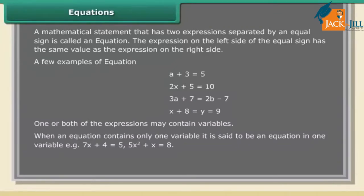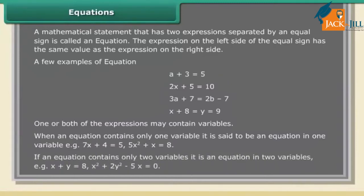When an equation contains only one variable, it is said to be an equation in one variable — for example, 7x + 4 = 5, or 5x² + x = 8. If an equation contains only two variables, it is an equation in two variables — for example, x + y = 8, or x² + 2y² − 5x = 0.